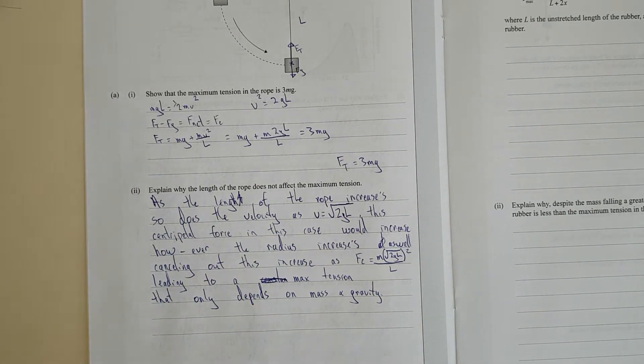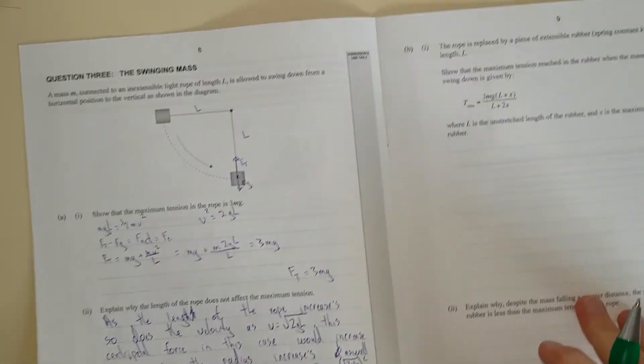I feel like I probably could have at the start elaborated that the only change in tension that can occur is due to a change in centripetal force, because the mass and gravity are obviously going to be kept constant, but that's all right.